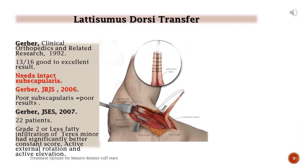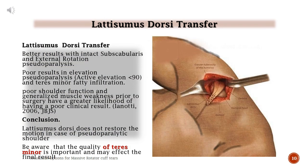Gerber, 2007: 22 patients — those with Grade 2 or less fatty infiltration of teres minor had significantly better Constant Score, active external rotation, and active elevation. Latissimus dorsi transfer yields better results with intact subscapularis and external rotation pseudoparalysis, but poor results in elevation pseudoparalysis (active elevation less than 90 degrees) and teres minor fatty infiltration.